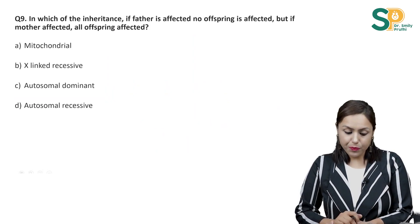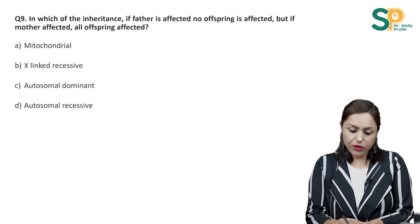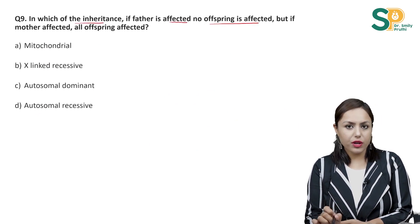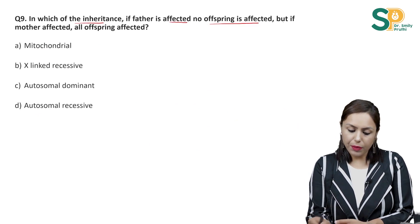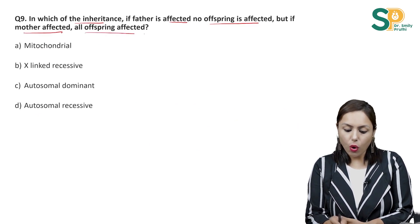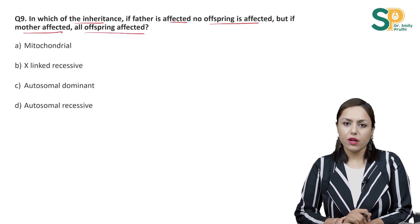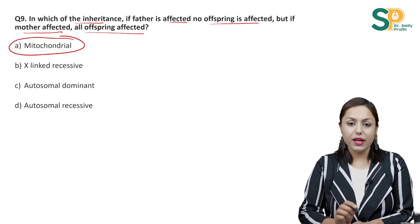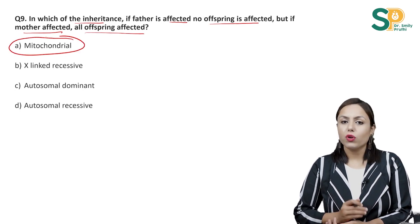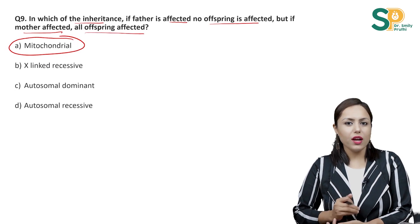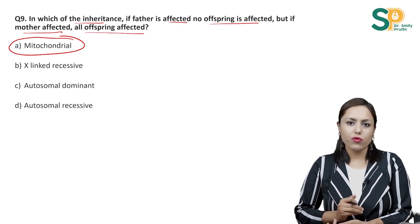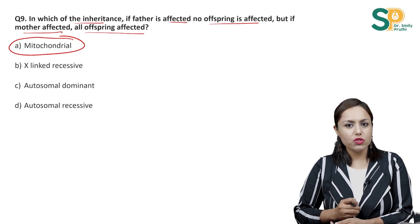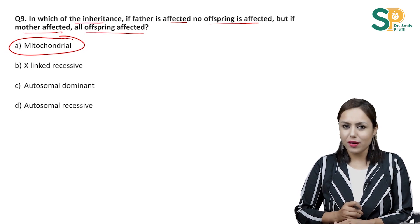Coming to question number 9: In which type of inheritance, if the father is affected no offspring is affected, but if the mother is affected all offspring are affected? It is mitochondrial inheritance, because mitochondria are only derived from the mother — there is no role of the father in mitochondrial genes or DNA.